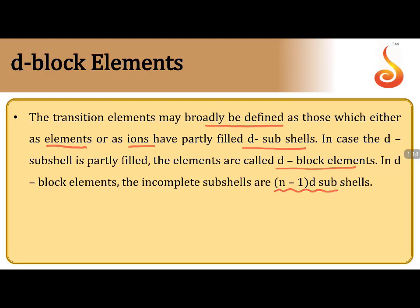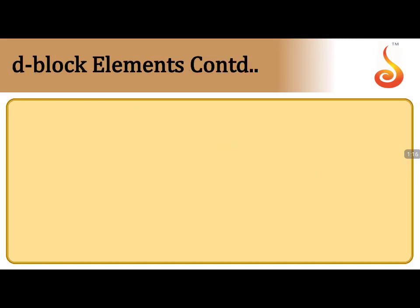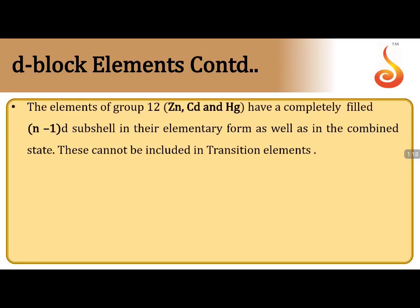In D block elements, the incomplete sub-shells are the (n-1)d sub-shells. The general electronic configuration is (n-1)d^(1-10) ns^(1-2), where in some cases ns can come to 0. Even d^0 to d^10 is possible, giving the electronic configuration (n-1)d^(1-10).